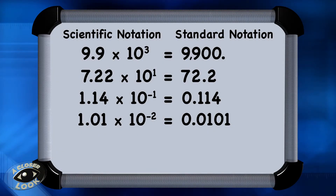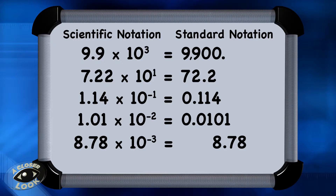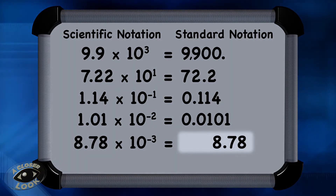Let's do another one. Let's take 8.78 times 10 to the minus third power. Since the exponent is negative, slide this decimal to the left one, two, three places. Fill in these gaps with zeros, and you now have 0.00878.